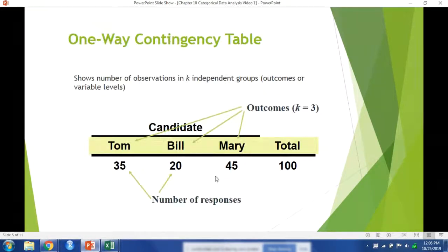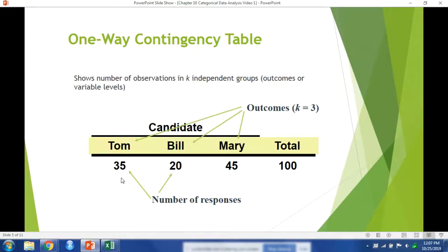So on this previous slide, this was our observed values. This would be n1, n2, n3. But let's say we expect them all to be one-third. So this should have been 33, 33, 33. So calculate that out. It would be 35 minus 33 squared divided by 33. And then we do that for each outcome and we would sum them together. And that would give us our chi-squared statistic.